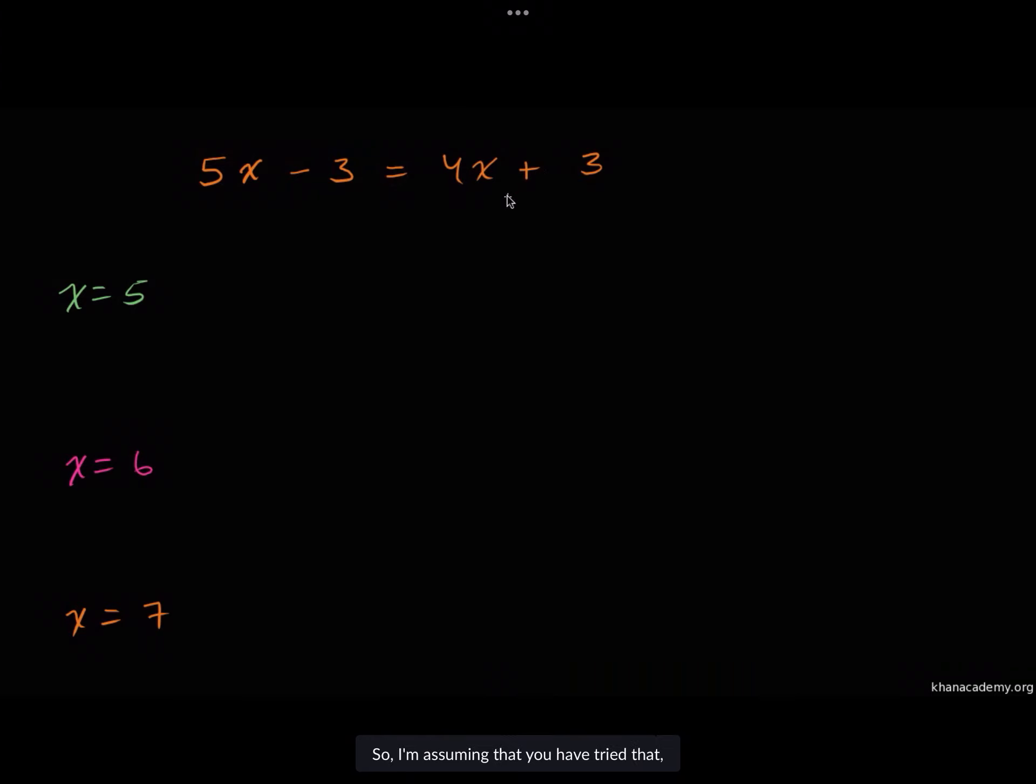So I'm assuming you've tried that. Let's work through each of them step by step. If x is equal to five, then in order for this to be true, five times five minus three needs to be equal to four times... everywhere we see an x, we're going to put a five there. Actually, let me just color code it.